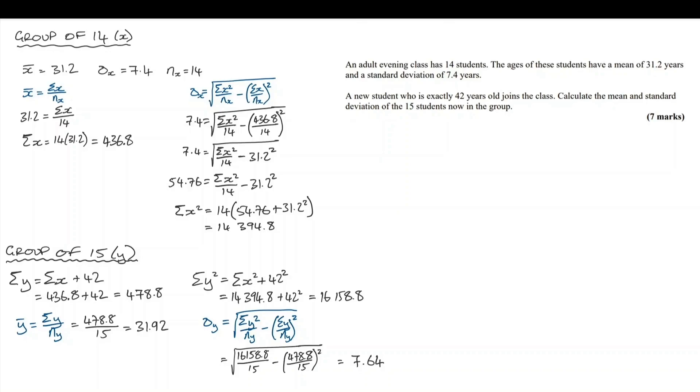So another sense check. Since the value 42 was more than 7.4 away from the original mean, we should expect the standard deviation to increase. And we've seen that it has increased.